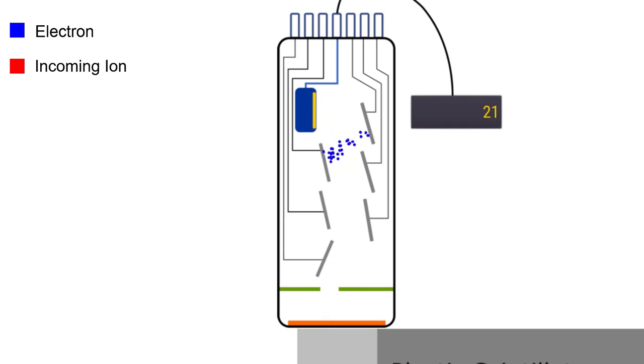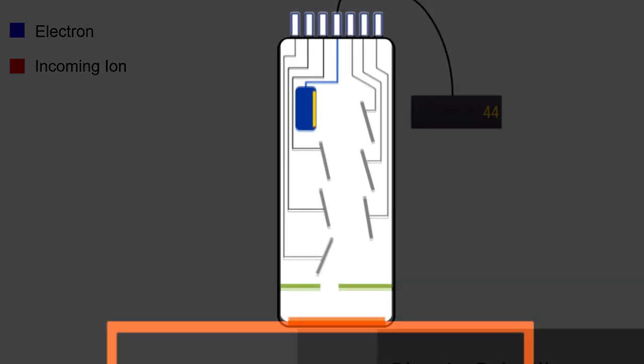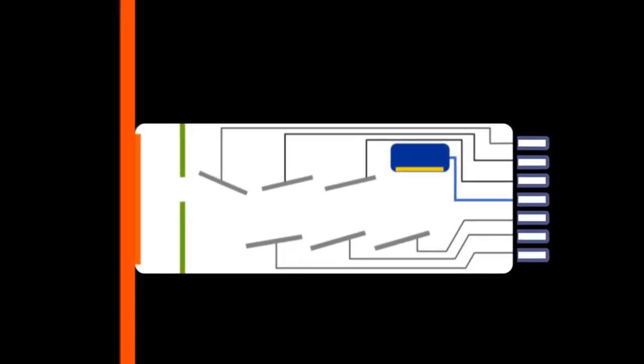Eventually, this beam of electrons is sent to an electronic circuit that measures its intensity or current. So that's how an electron multiplier ion detector works.